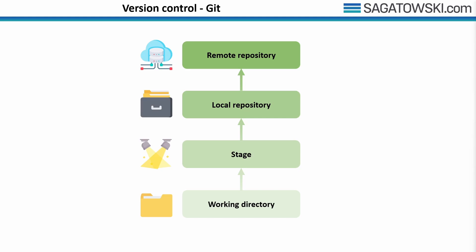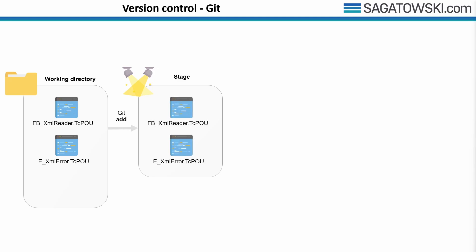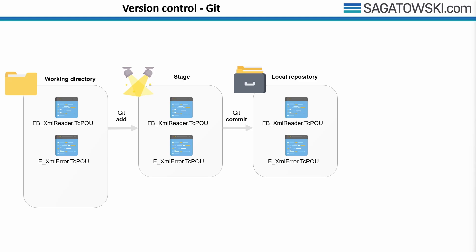The final component is the remote repository — versions of your project hosted on the internet or network. Note that you don't need a remote repository at all; you can have the full experience with only a local repository, though when working in a team a remote repository is preferable. Your basic Git workflow is: first, modify files in the working directory; next, stage the changes you want to include in the next commit using 'git add'; then commit your changes with 'git commit', which stores them as a snapshot in the local repository; finally, upload to the remote repository with 'git push'.